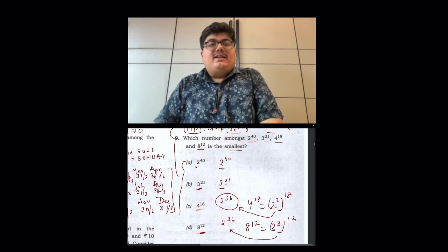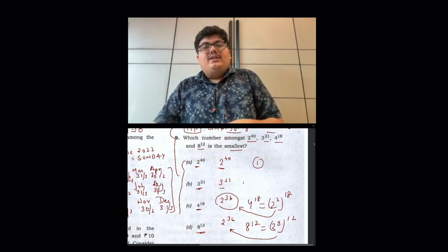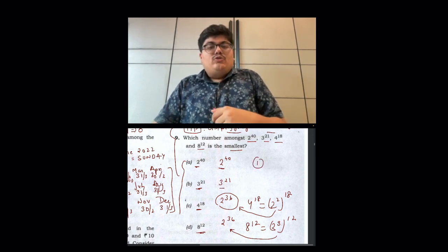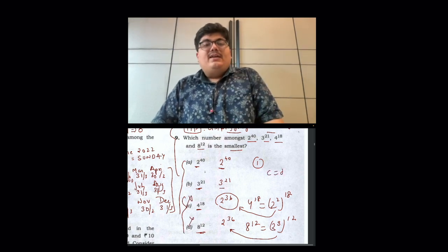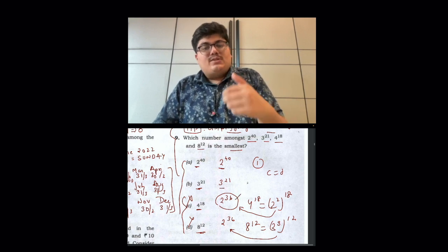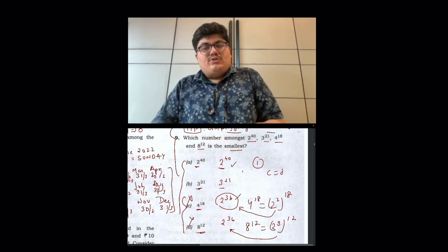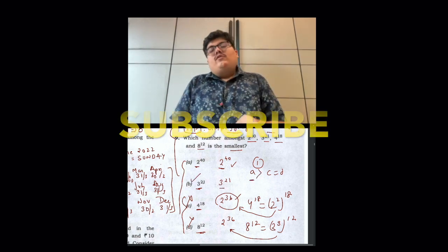We will simplify it. Now we will do observe. What do we need to do in observing? Now we will ask the smallest term. 2 power 36 is an option and that is not the smallest. 2 power 40 is not the smallest. If 3 is used, it can be smaller. Now it will also be B. So we have to solve this whole thing.